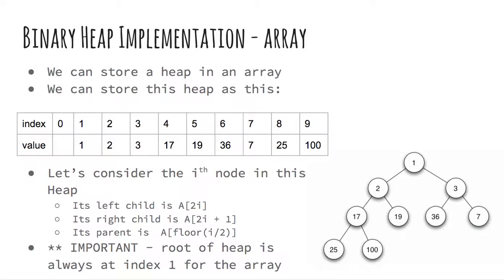Typically, heaps are implemented as arrays. To make math easier, we are going to make the root of the heap at index 1 for the array. Let's consider the ith node in this heap. Its left child is at 2i and its right child is at 2i+1. Its parent is at floor of i/2.